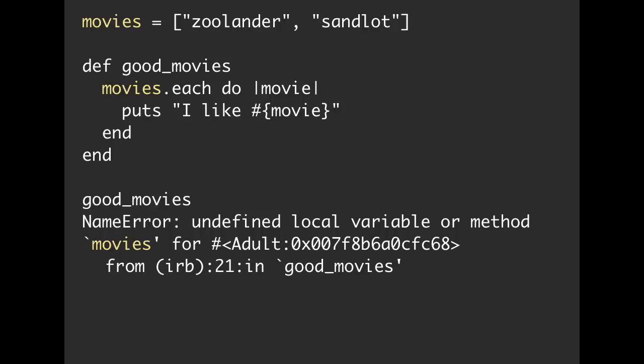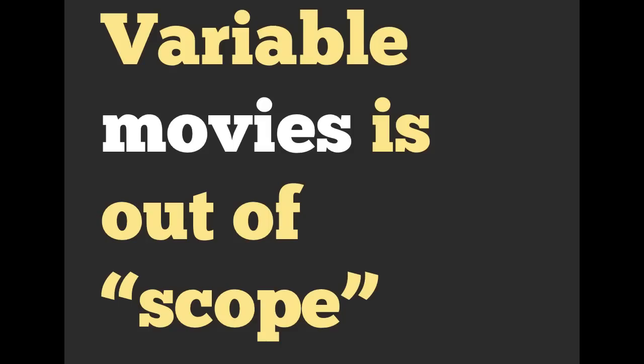If you look at this, we are actually defining movies outside of the context of our method. So we're defining it outside of good movies. So when we actually get into the method, it says it doesn't have a movies variable. So how could we fix this? Also, the technical term, the terminology we'll use is movies is going to be out of scope. And we're going to talk a little bit about how to define scope mentally and sort of what that is.